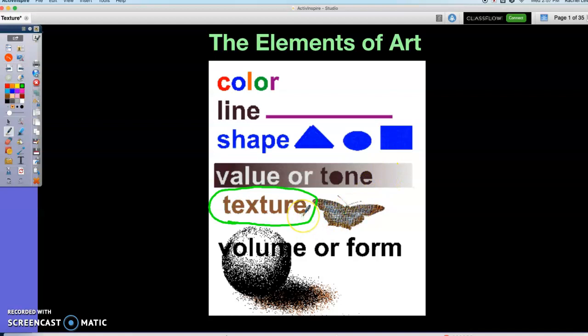Texture is the one we're going to talk about today. Lots of things have texture. If you notice, this butterfly here contains a lot of texture. And then finally, volume or form.